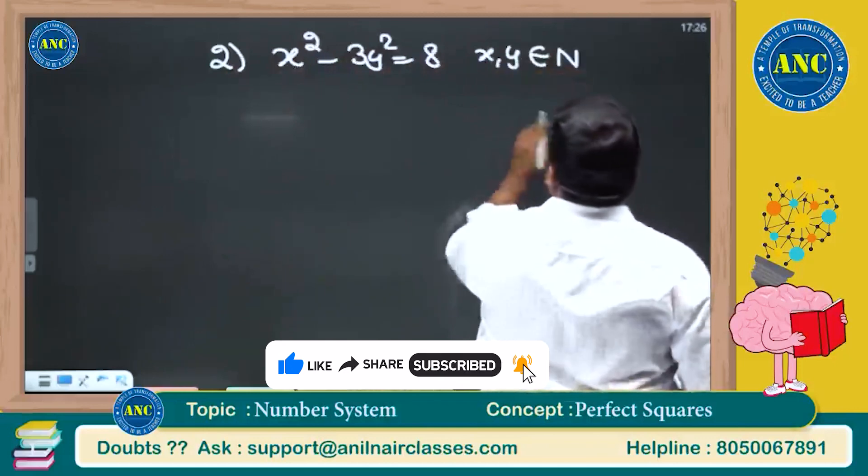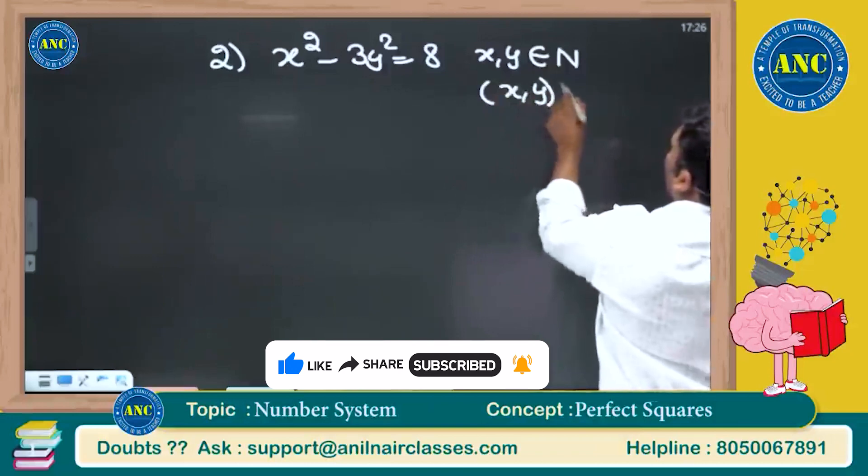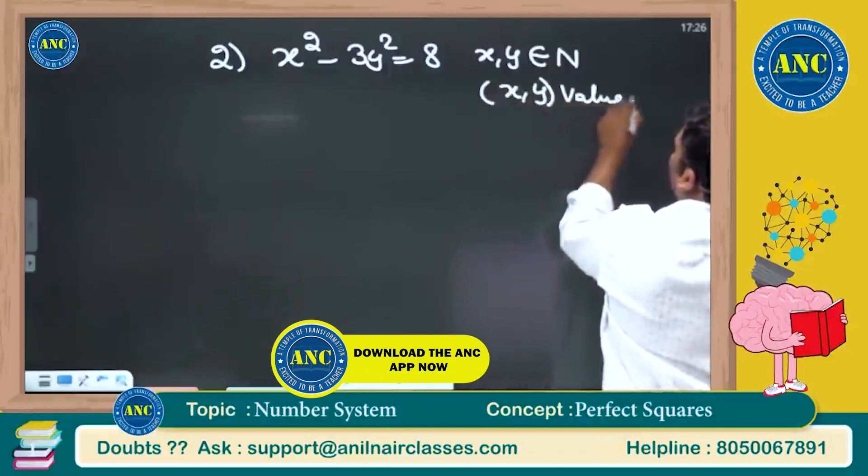x, y are natural numbers. How many values will x, y take?